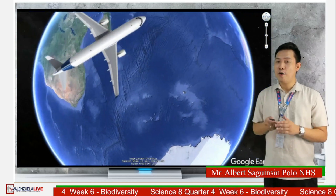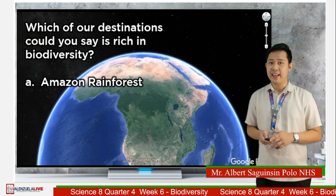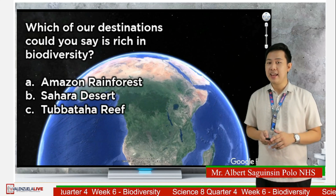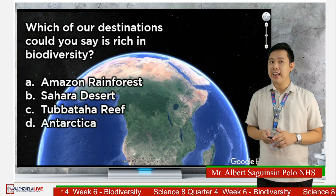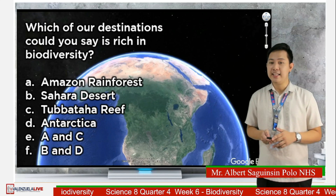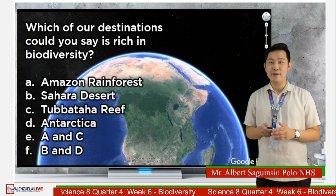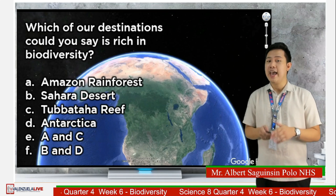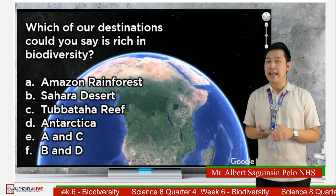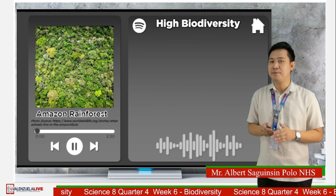From our world tour, which of our destinations could you say is rich in biodiversity? A. Amazon Rainforest. B. Sahara Desert. C. Tubbataha Reef. D. Antarctica. E. A and C. Or F. B and D. Comment your answer. Very good! Amazon Rainforest and Tubbataha Reef are rich in biodiversity because they consist of a greater number of species inhabiting the place. Therefore, they are considered to have high species biodiversity.